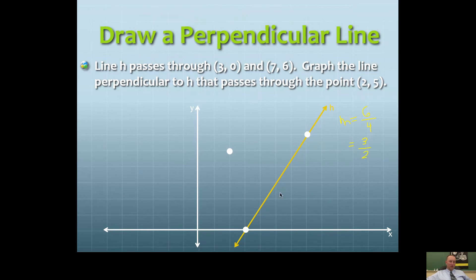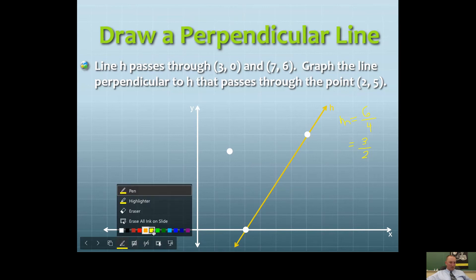That's the slope of this yellow line. Now you need a line that's perpendicular to this. So if it's going to be perpendicular to this line, the slope has to be opposite.